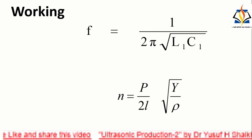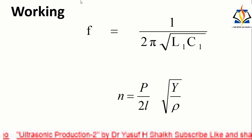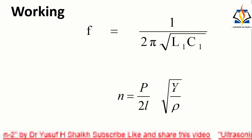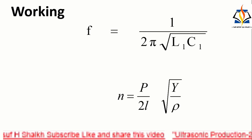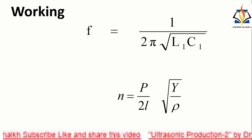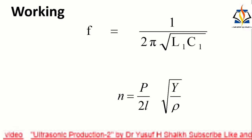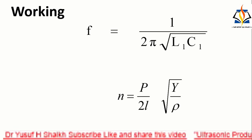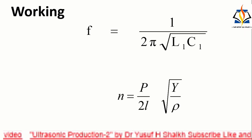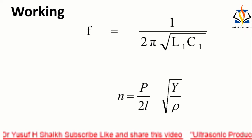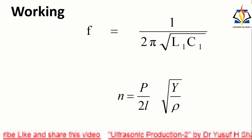The frequency of vibration is given by n = P/(2L)√(Y/ρ) where P = 1, 2, 3, 4, etc. P = 1 is fundamental first overtone, P = 2 is second overtone, etc. Y is Young's modulus of the crystal and ρ is density of the crystal.